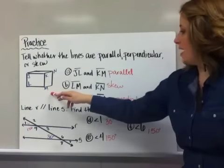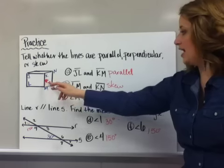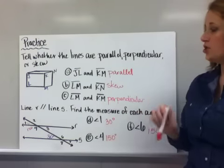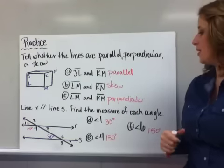LM across the base of the figure and KN coming on like the back corner, they are skewed. They never intersect and they're not parallel.